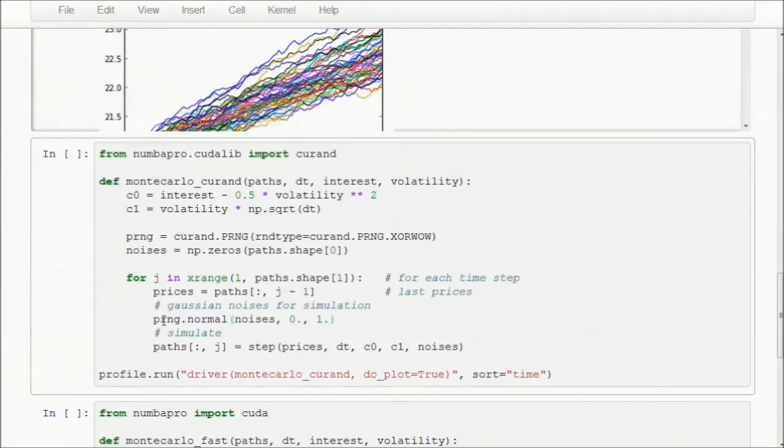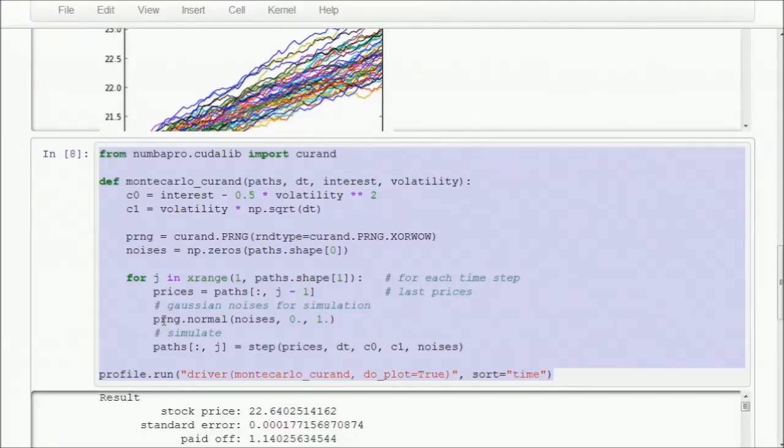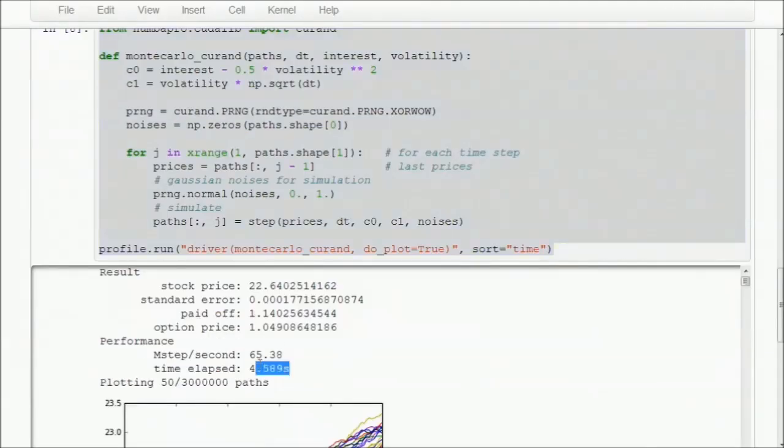And that's it. With just three line changes, and without having written any GPU code, we've accelerated our random noise generation. Let's rerun our application and see what kind of speed up we get. In my case, I got over a 3x perf improvement.